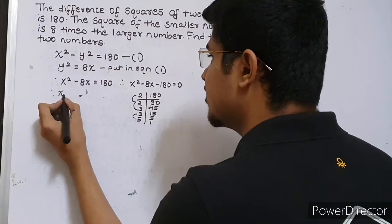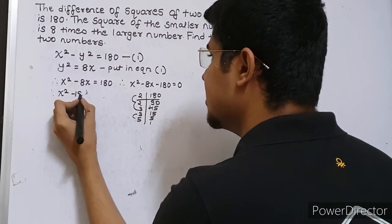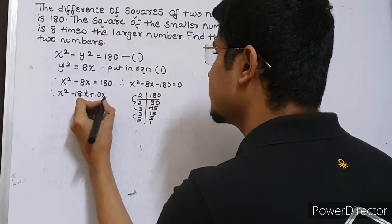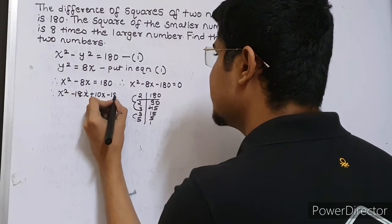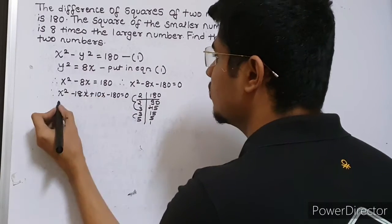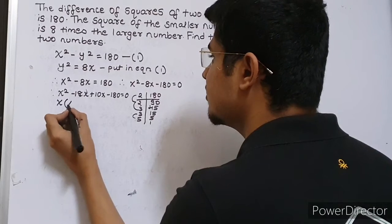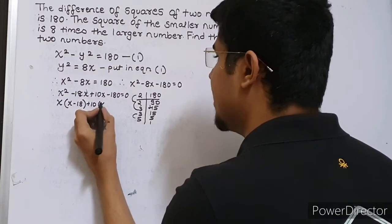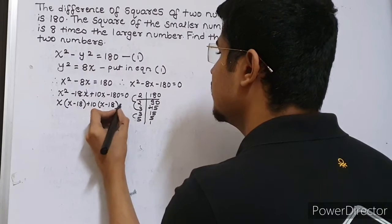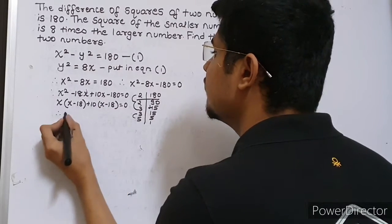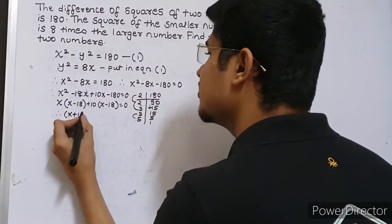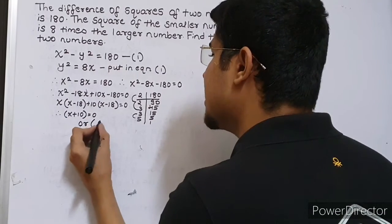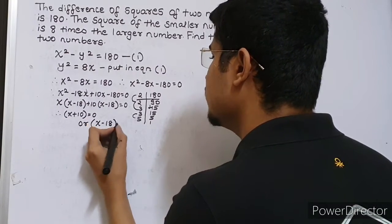Therefore x squared minus 18x plus 10x minus 180 is equal to 0. Taking the common terms: x into (x minus 18) plus 10 into (x minus 18) is equal to 0. Therefore x plus 10 is equal to 0 or x minus 18 is equal to 0.